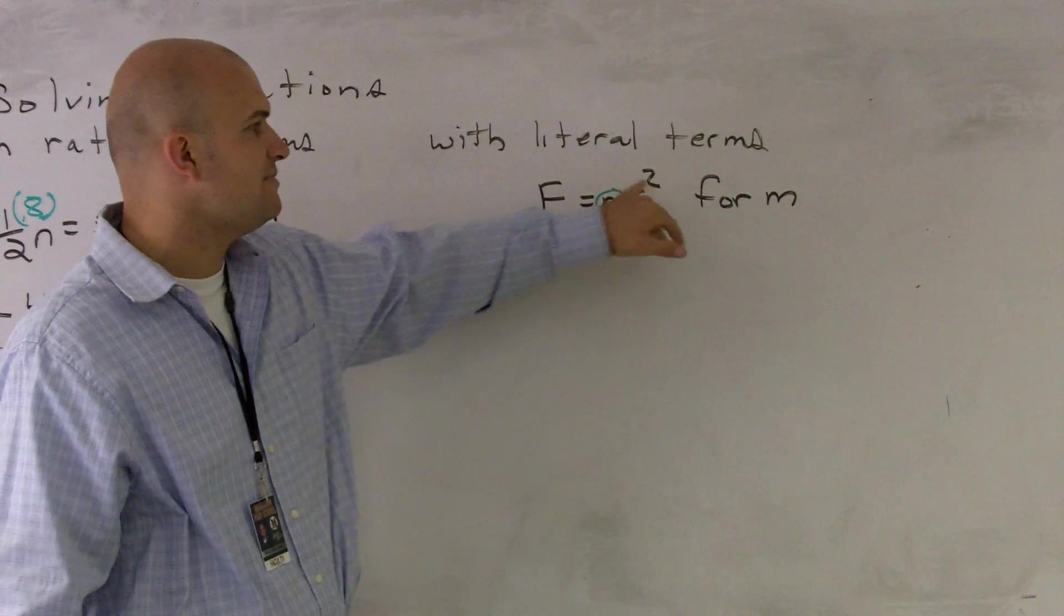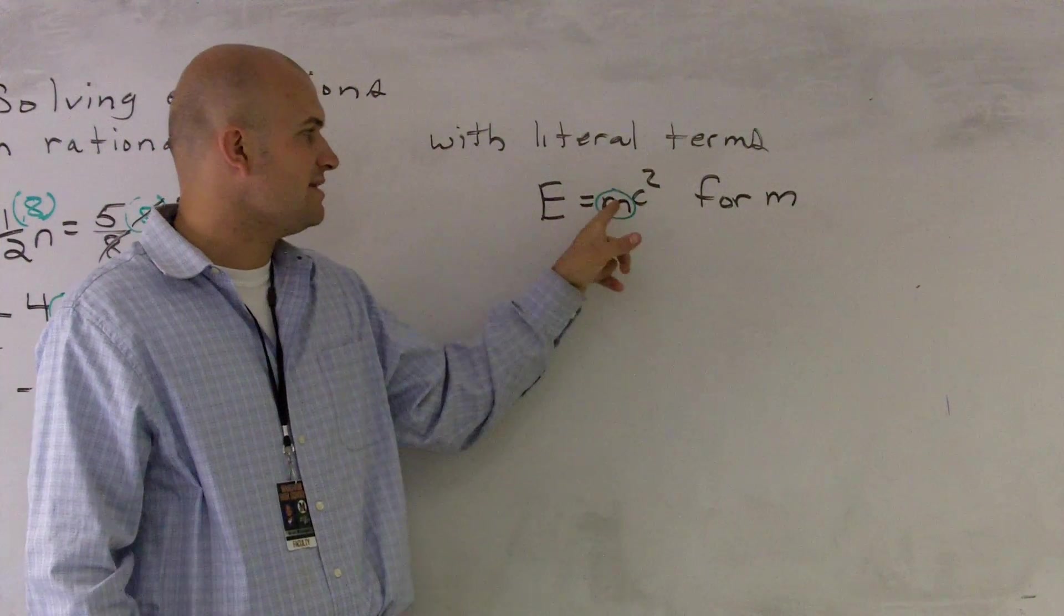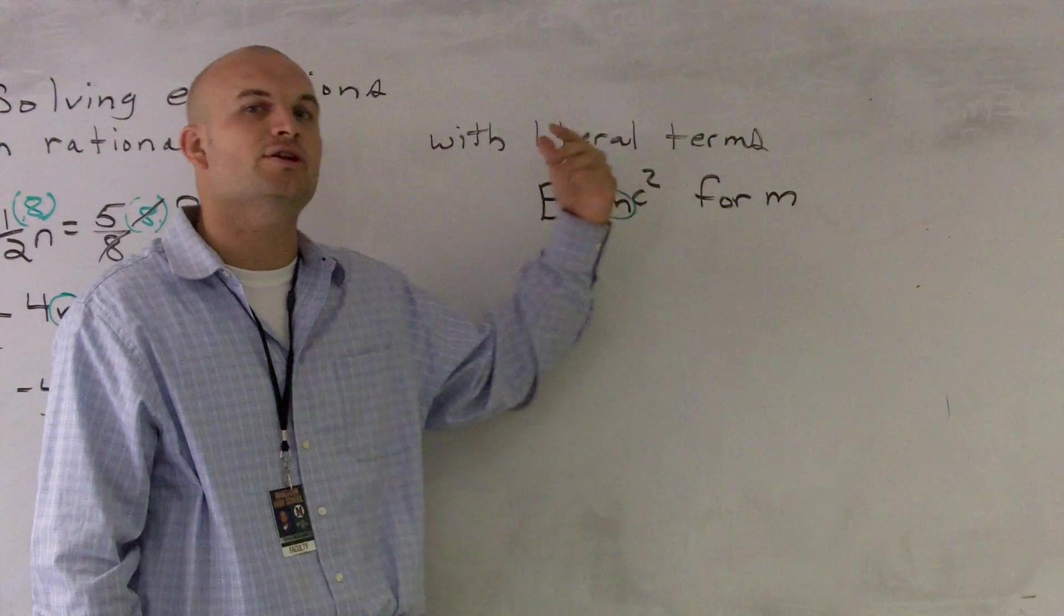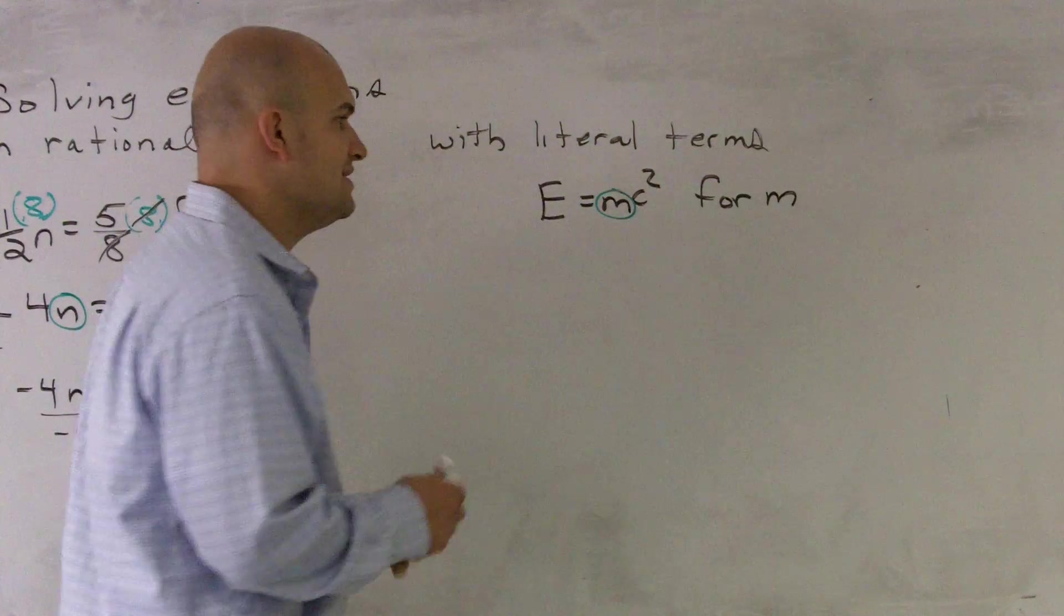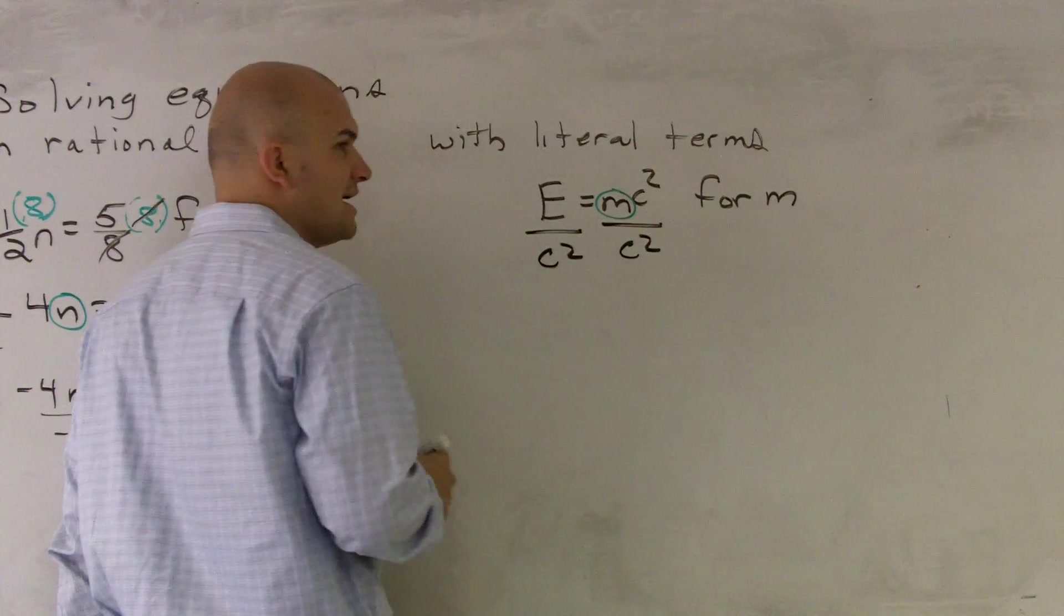Here, what you notice, in between these two terms, we have multiplication. Therefore, to get this term by itself, I need to get rid of the c squared. I'm going to use the inverse operation, which will be division. So I'll divide by c squared on both sides.